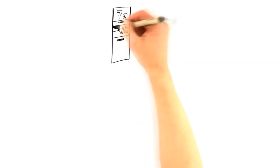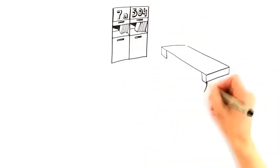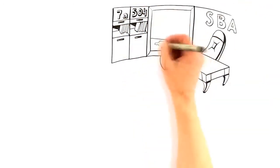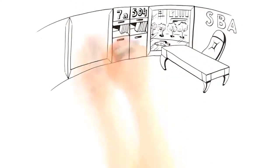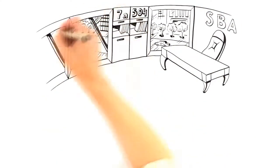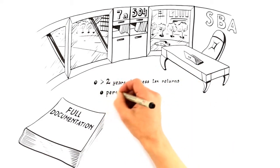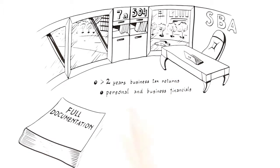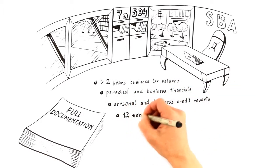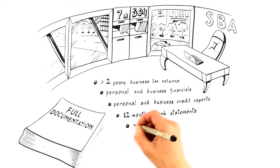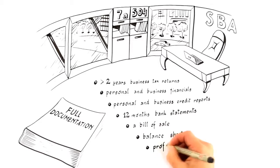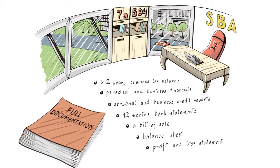Both SBA 7A and SBA 504 programs are full documentation programs and will require your business financials to be approved. You will be asked for 2 or more years of business tax returns and personal and business financials. The lender will review both your personal and business credit reports to determine approval, and they will also request and review 12 months of your business bank statements. SBA 504 program also requires you provide a bill of sale, balance sheet, and profit and loss statement for the purchase of an existing business.